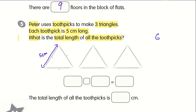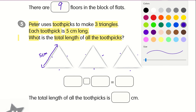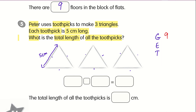So using our G, E, T, we need to find out how many groups there are first. Counting all the toothpicks: 1, 2, 3, 4, 5, 6, 7, 8, 9 — so there are 9 toothpicks. For groups, we write down 9. Each toothpick has a length of 5 cm, so we write 5 next to E. We need to find the total length of all the toothpicks, so we multiply. 9 multiplied by 5 gives you 45. The total length of all toothpicks is 45 cm.